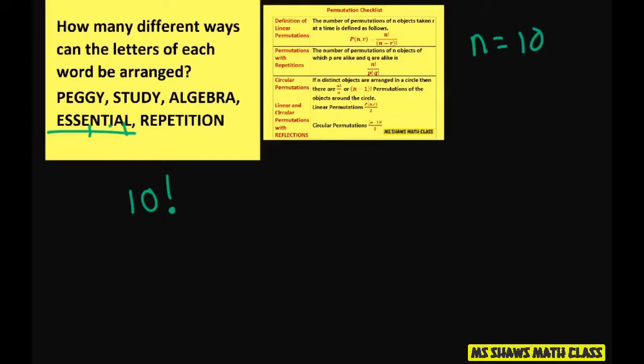And how many E's do we have? Just one. Oh, we have two E's. So I got my E's. We have two S's. Two S's. We have one N, one T, one I, and one N. Okay. So everything else is just one. So that's two factorial divided by two factorial.